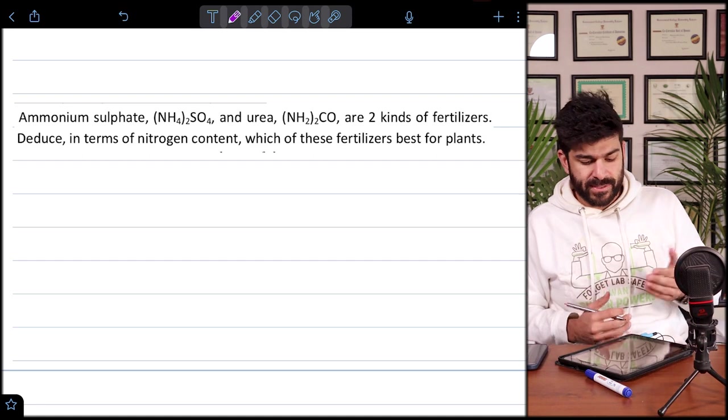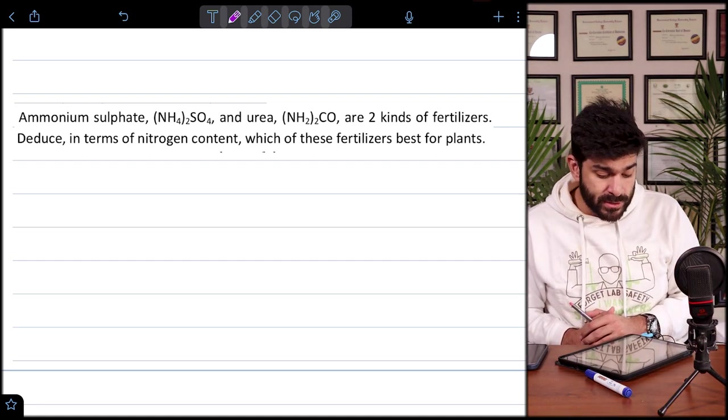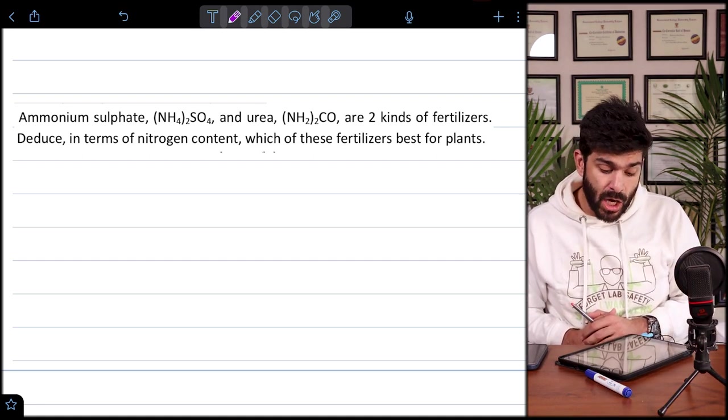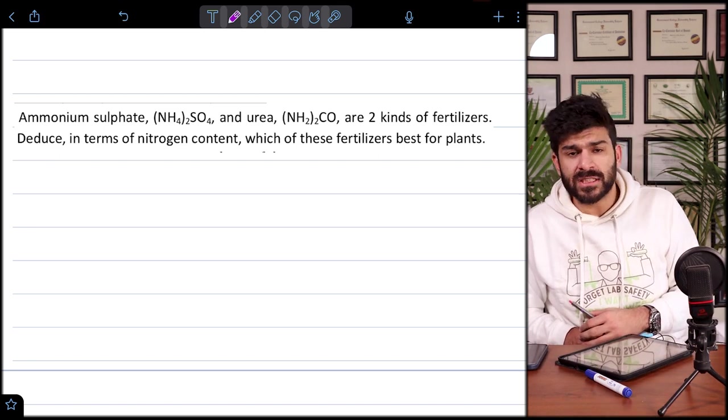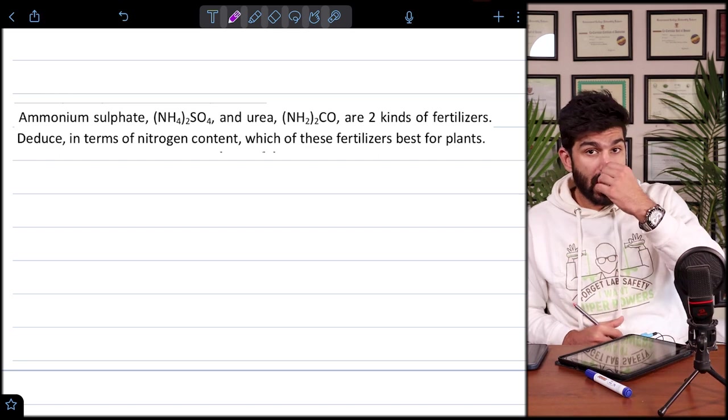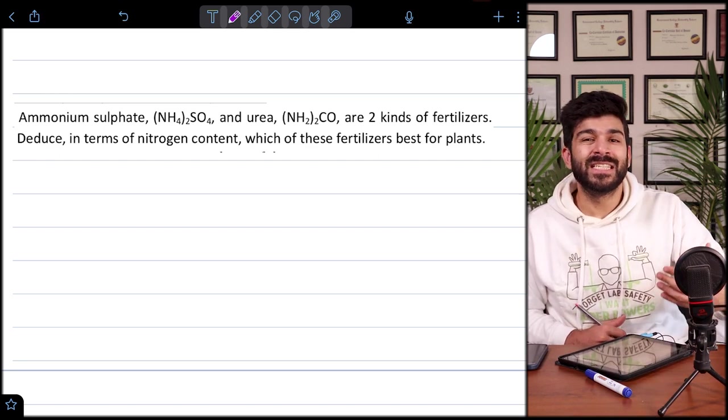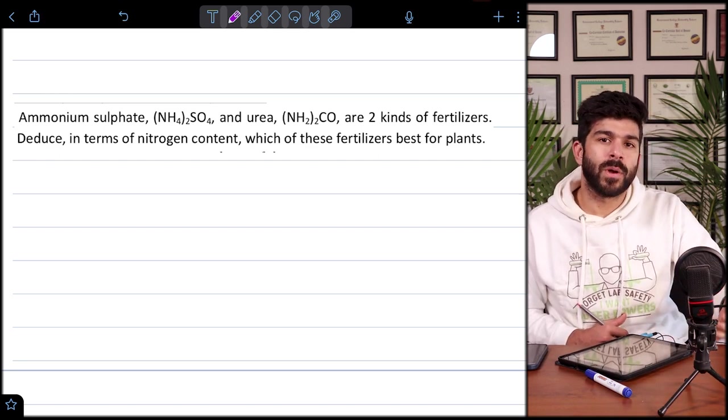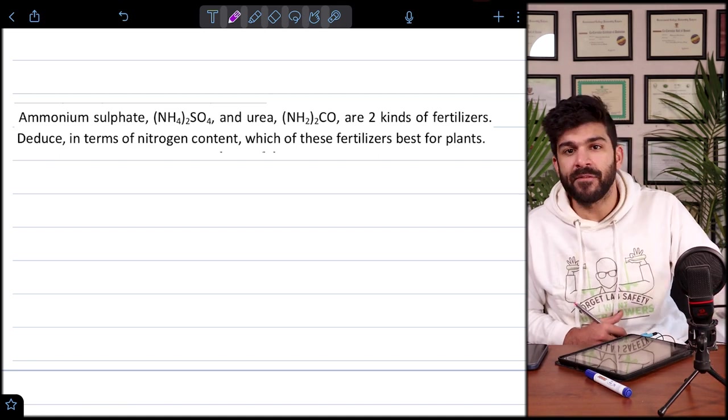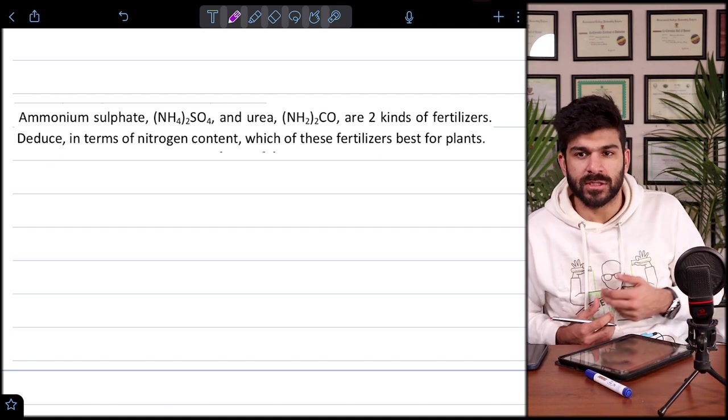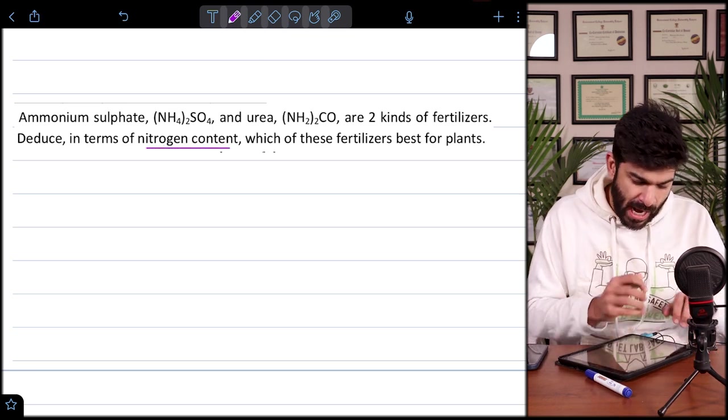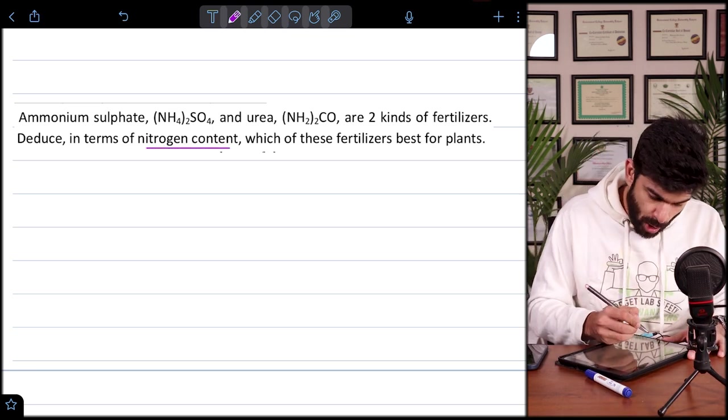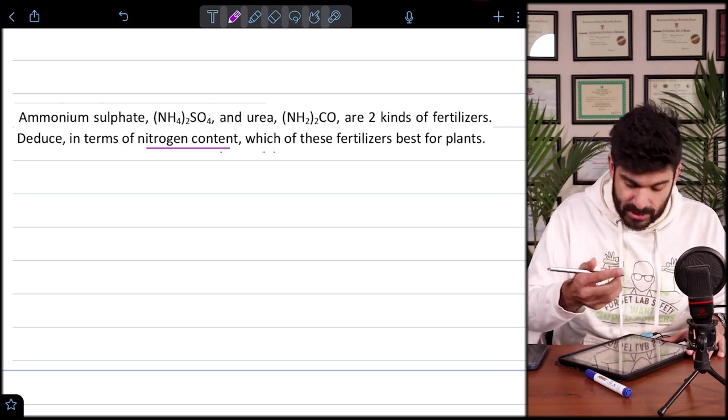Let's do another example. Ammonium sulfate and urea are two kinds of fertilizers. In terms of nitrogen content, which of these fertilizers is best for plants? Again, talking about fertilizers, we know that fertilizers fill in the nutrients for plants. NPK fertilizers: nitrogen, phosphorus and potassium fertilizers. So we are just talking about the nitrogenous fertilizers here. And we have two samples with us. So ammonium sulfate. Again, let's split the screen again here.